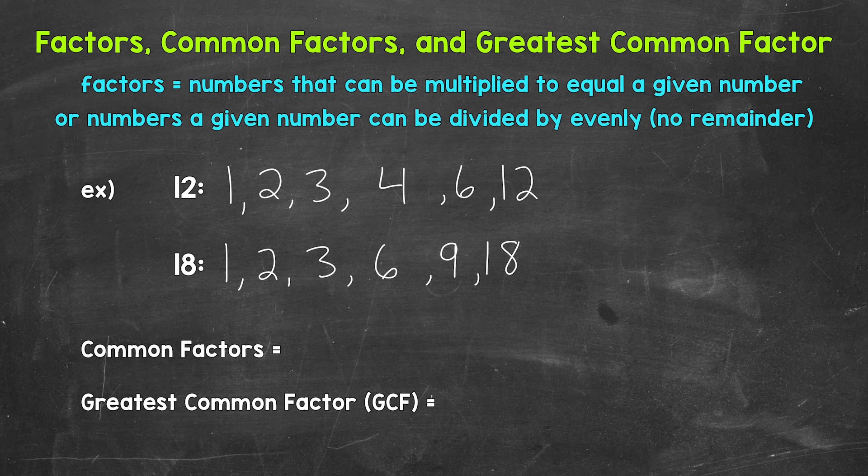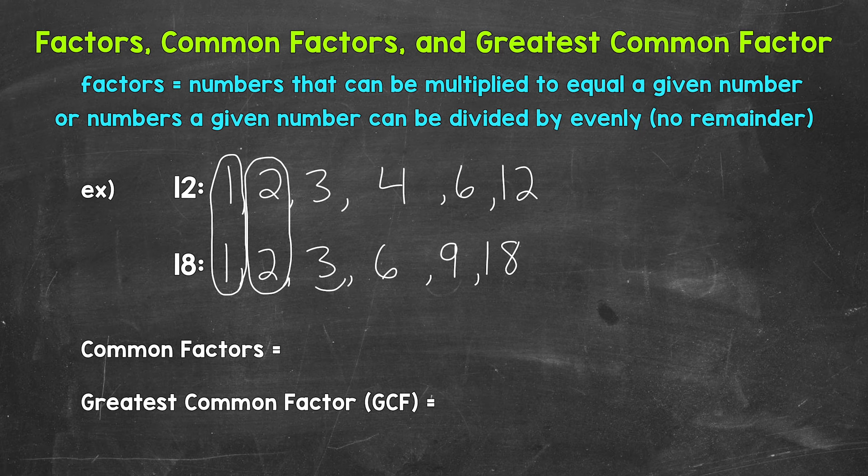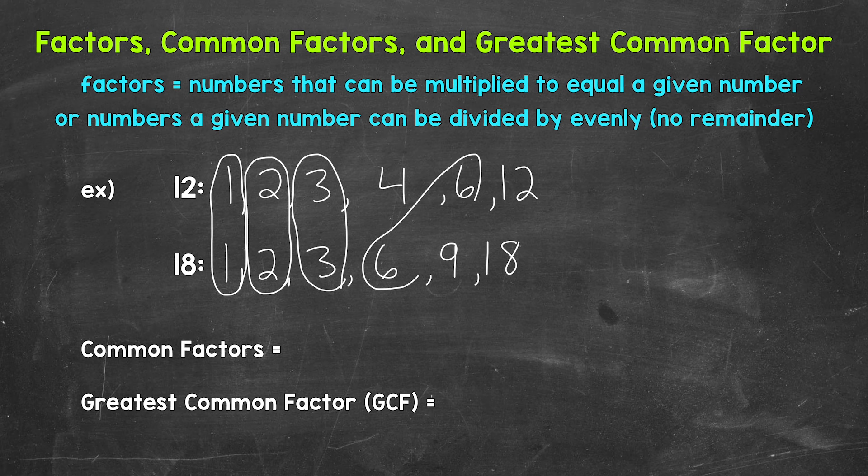Now let's take a look at the common factors between 12 and 18. That just means the factors they share, the factors they have in common. So 1 is a common factor, 2 is a common factor, 3 is a common factor, and then 6 is a common factor. So the common factors between 12 and 18 are 1, 2, 3, and 6.